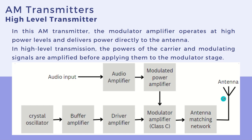In this high-level transmitter, the modulator amplifier operates at higher power levels and delivers power directly to the antenna, which is why it is called a high-level transmitter.